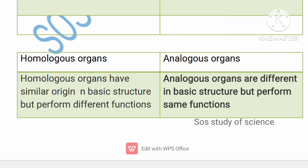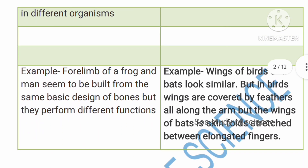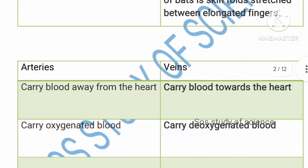Example for homologous organs: the forelimbs of a frog and a man — internal body design is similar but the forelimb is used for different purposes. Example for analogous organs: wings of birds and a bat — they look completely different but perform the same function. Analogous organs have different body design but perform the same function.